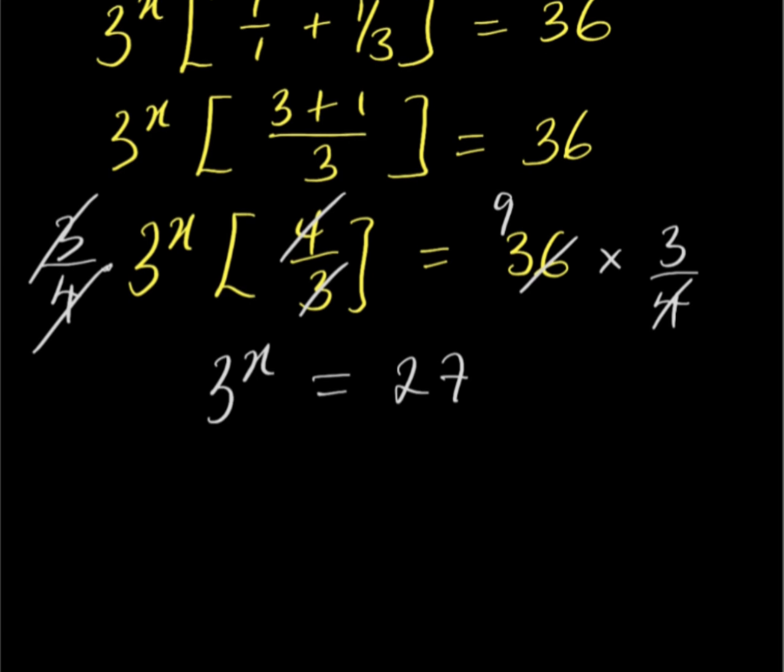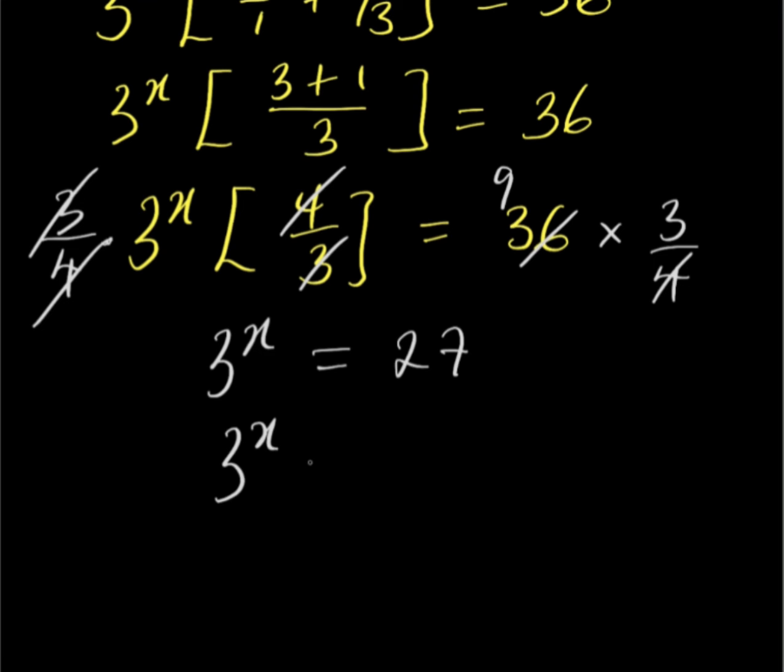So now 3 to the power of x equals 27, which can be written as 3 to the power of 3, because 3 times 3 times 3 is 27. Since the bases are the same, we can conclude that the exponents must also be the same.